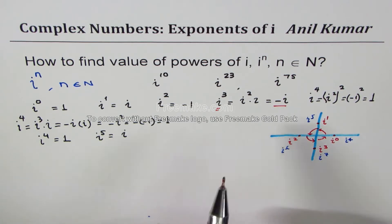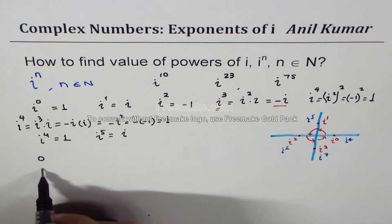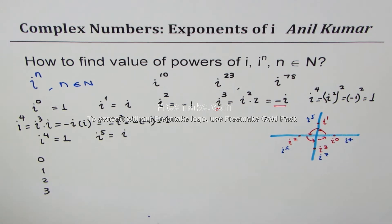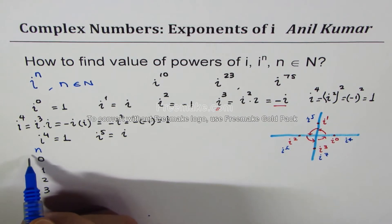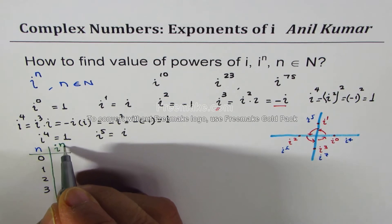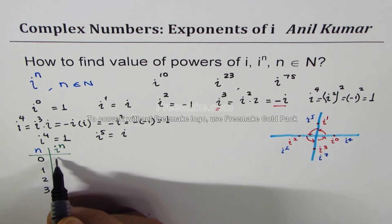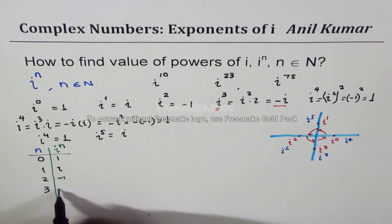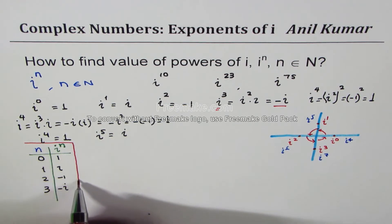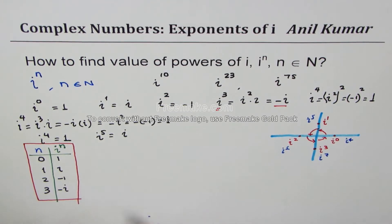Since after every four values the pattern repeats, for n = 0, 1, 2, 3 the corresponding values of i to the power of n are: for n=0 it is 1, for n=1 it is i, for n=2 it is minus 1, and for n=3 it is minus i. This is the repeating pattern we use.